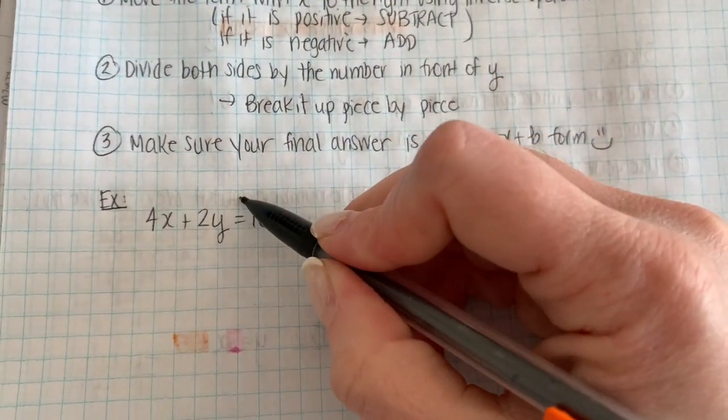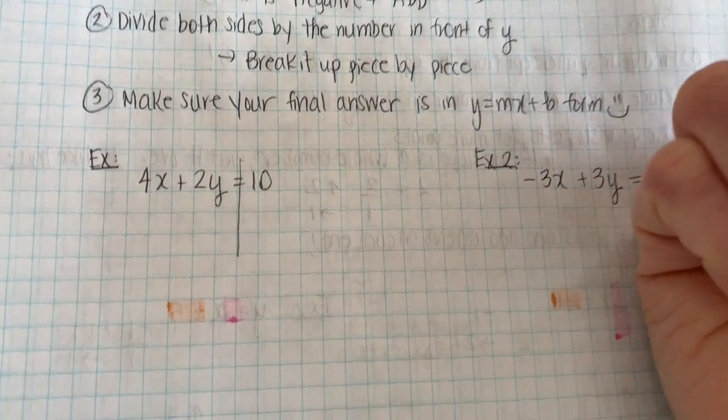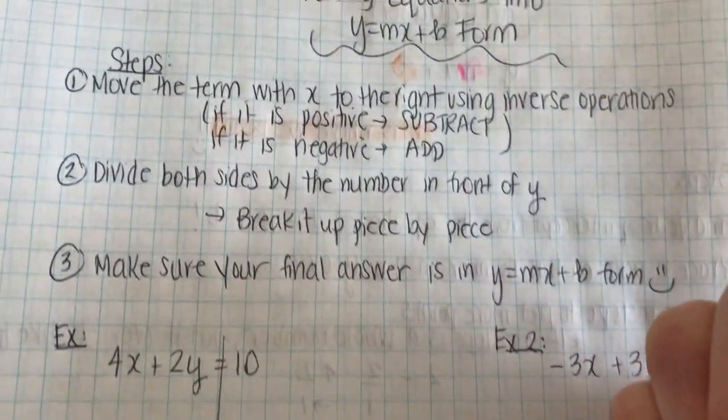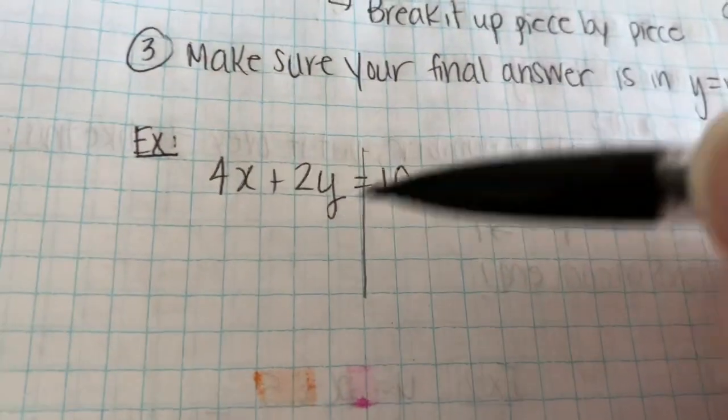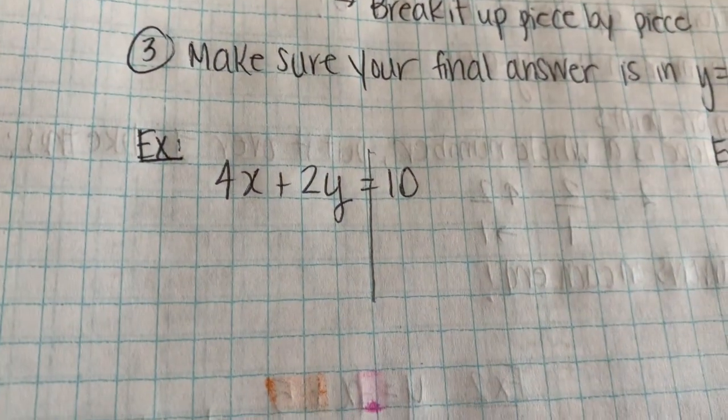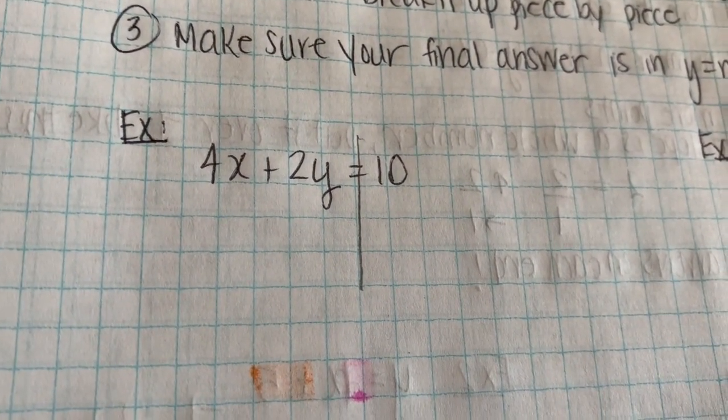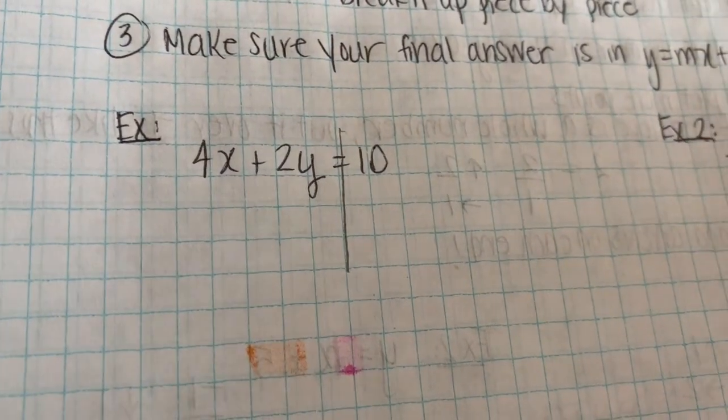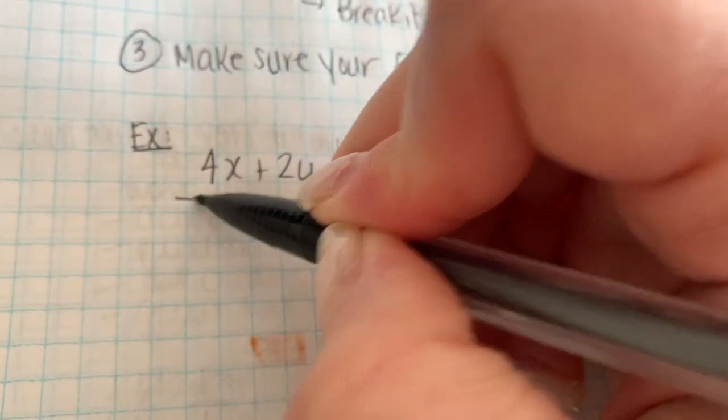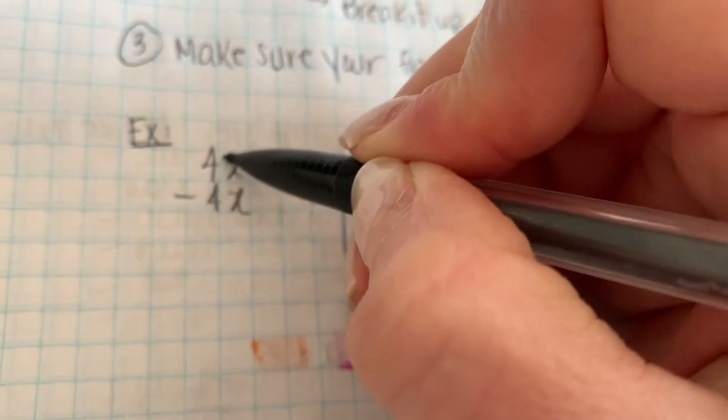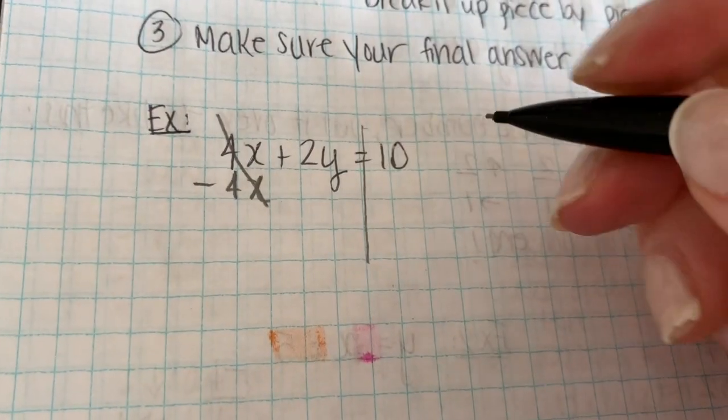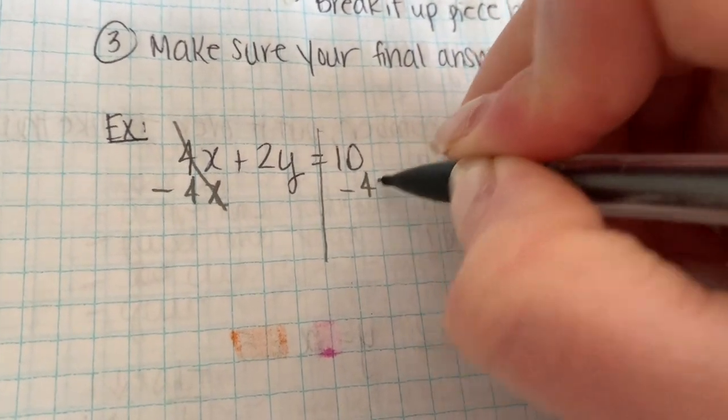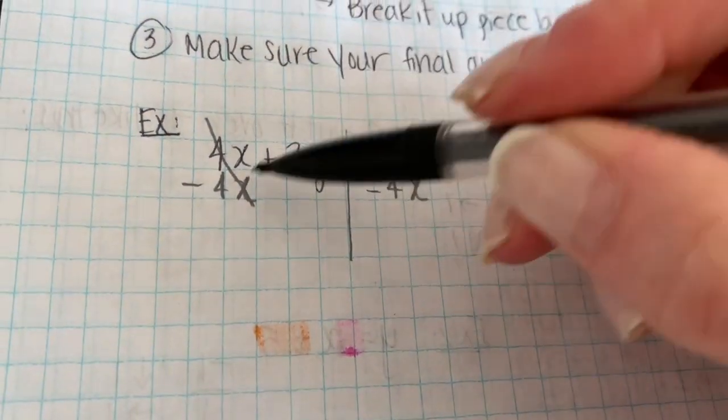First things first. Whenever I solve an equation, I always draw a line. My first step is to move the term with the x to the right using inverse operations. So my term with the x is 4x. Since it's positive, to move it over, I'm going to subtract. So I subtract here so that I can cancel it out because 4x minus 4x is 0. And what I do to one side, I have to do to the other side.